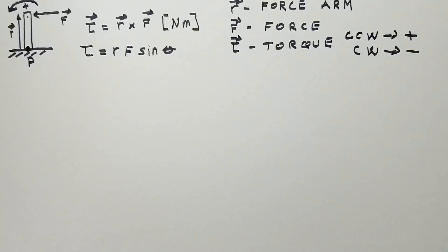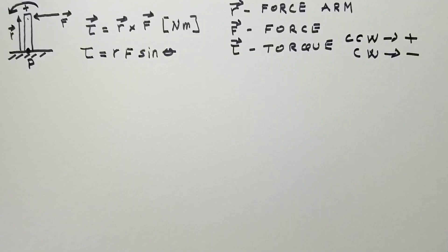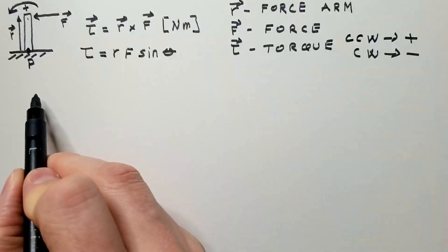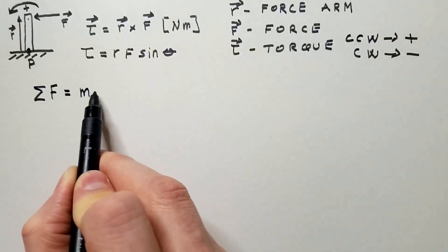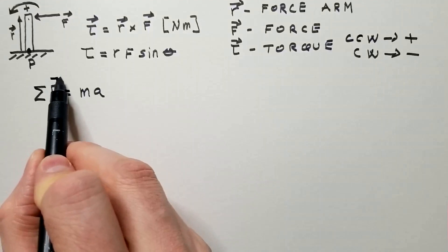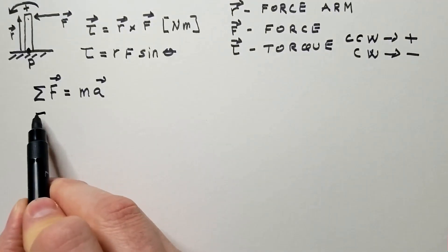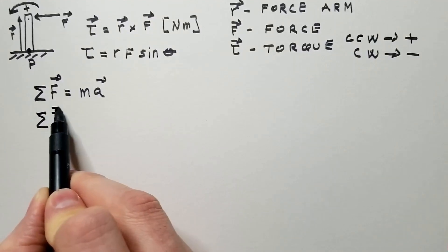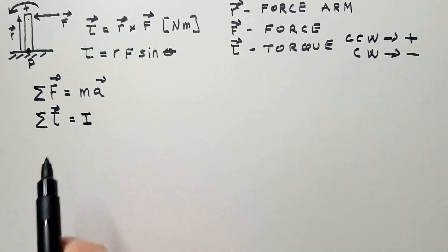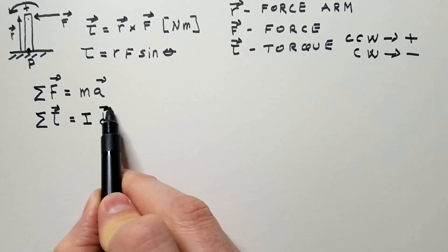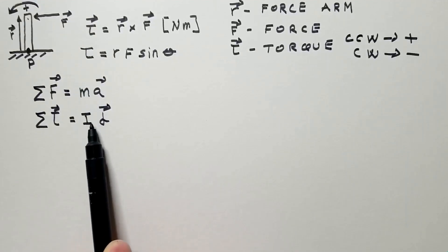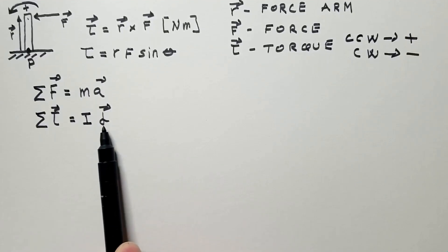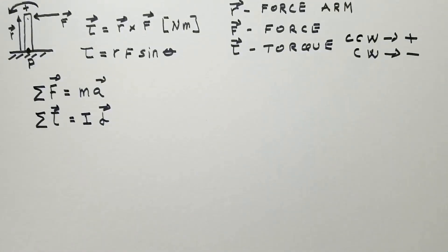We can conclude that there is an analogy between forces and torques. The second Newton's law for forces says that the sum of all forces equals mass times acceleration — we can put that in vector form. Similarly, the sum of all torques around some pivot point is a product of moment of inertia and angular acceleration. So in the case of rotation, mass is replaced with moment of inertia, acceleration is replaced with angular acceleration, and force is replaced by torque. We will talk in detail about moment of inertia in future videos.